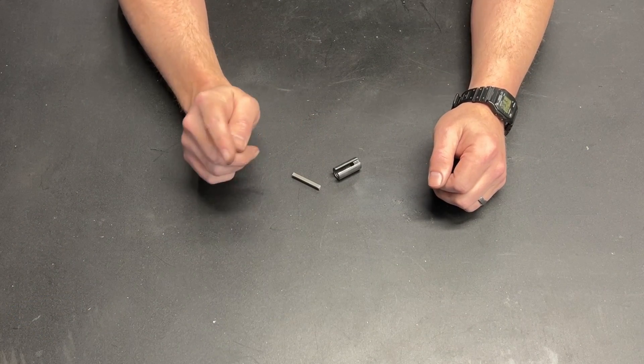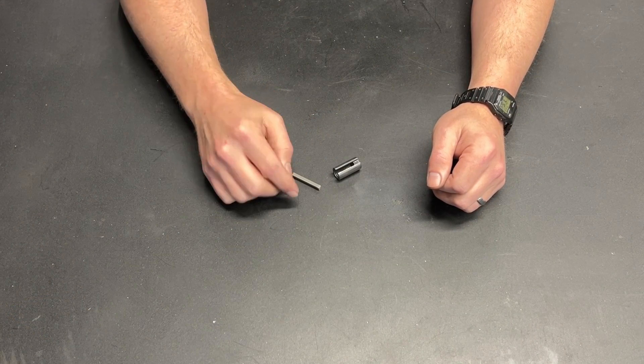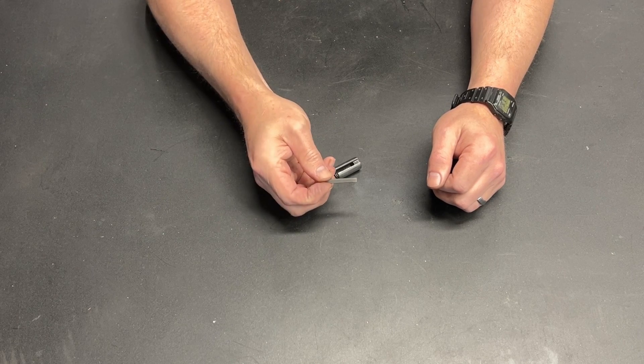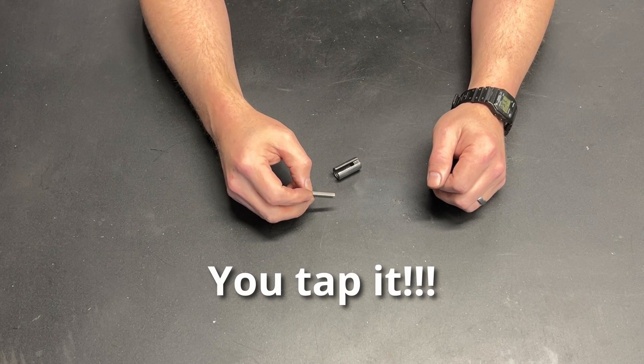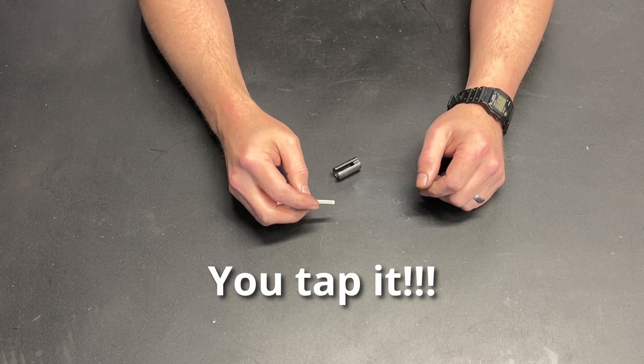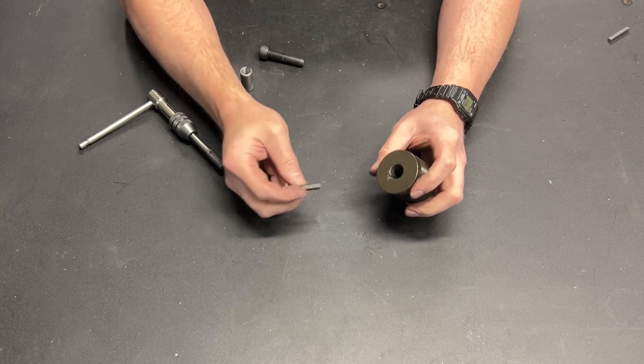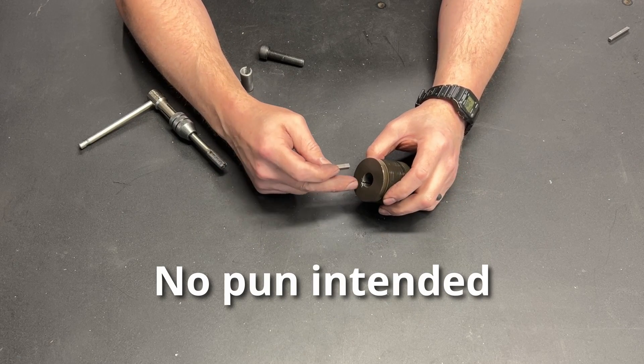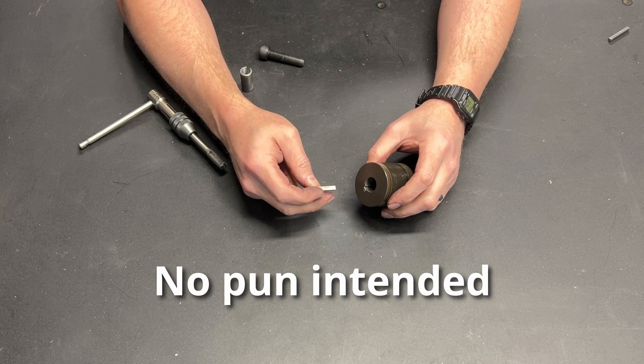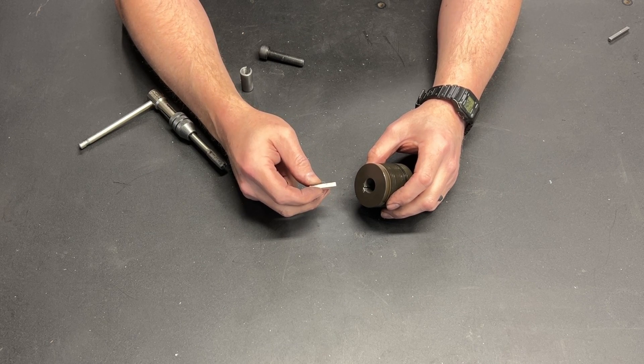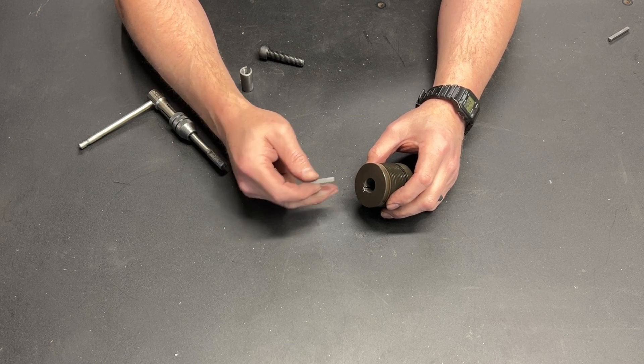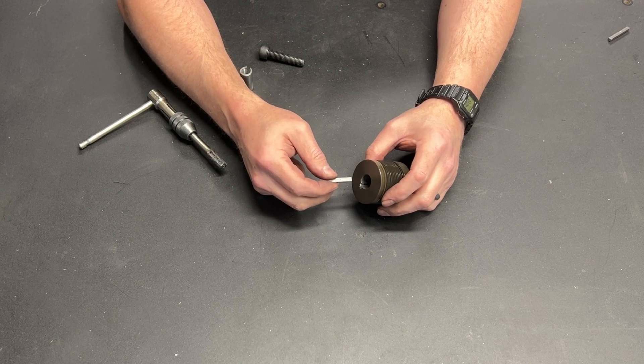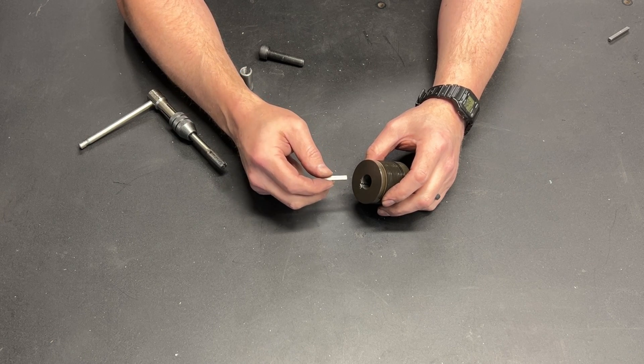The question that keeps coming up is how do you thread the key? And honestly it's way easier than you probably think it is. So the key to threading this key is using keystock that is a tight fit in whatever you're using to hold it while you thread it. If you use slightly undersized keystock, it'll flop around and it will make the threading process a whole bunch harder.